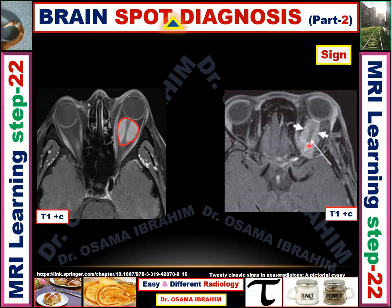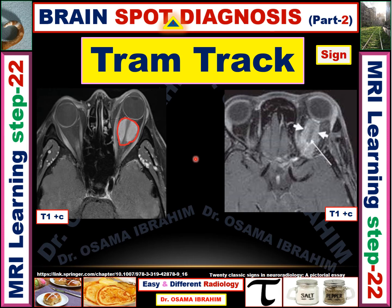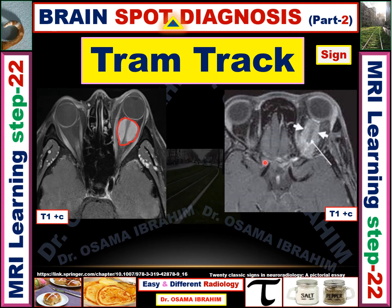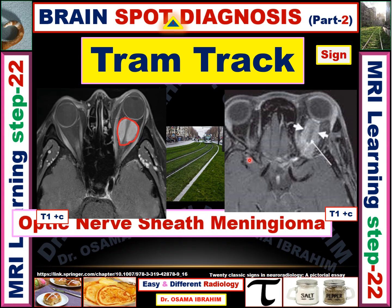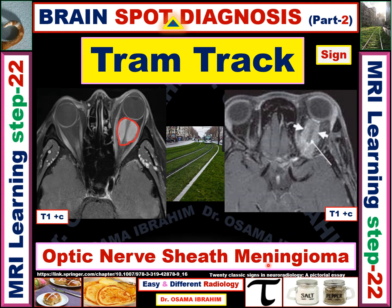However, comparing with the abnormal side, there are enhancing lesions on both sides of the optic nerve. The optic nerve appears in the center of the lesion, forming a track — this is the tram track sign. This is another patient also showing the tram track sign, with homogeneous enhancement. The tram track sign in the optic nerve region represents optic nerve sheath meningioma.